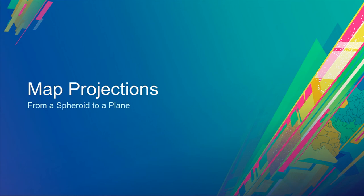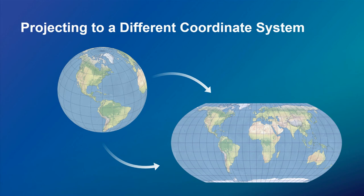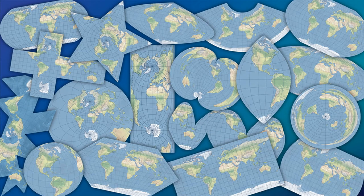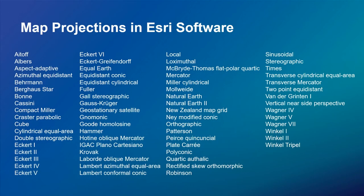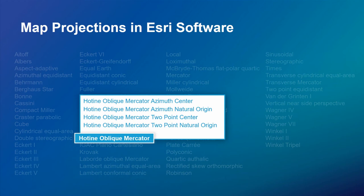Now we'll talk about map projections — converting from an ellipsoidal or spherical surface into a 2D representation. We support many projections, including some funky shapes like the Berghaus star. There are 68 unique algorithms and another 30 that are variants. For example, the Hotine Oblique Mercator has four different ways to define it: with a point and azimuth, with the origin at the center or at the natural origin, or with two points.